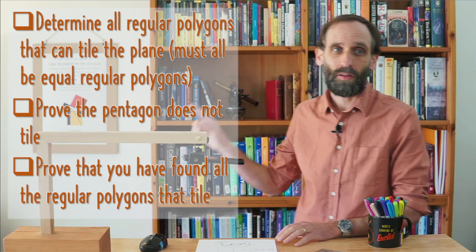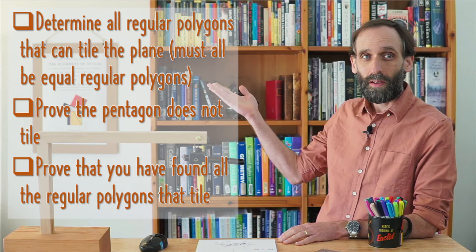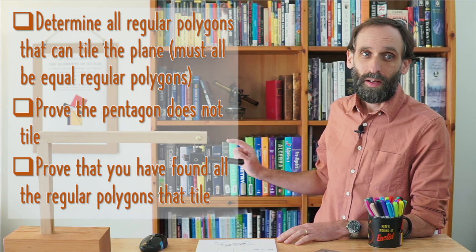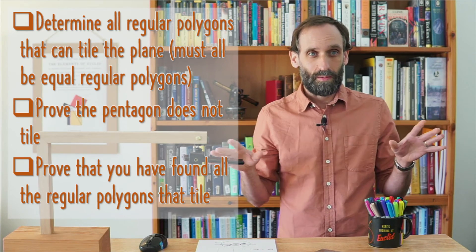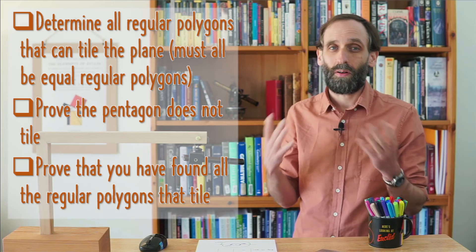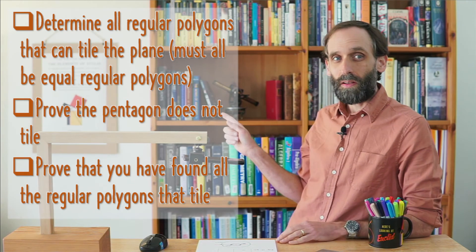Once you think you've figured out all the ones that tile, prove that regular pentagons cannot tile the plane. And then try to prove that you have actually discovered all the ones that do tile—prove that you are done, there are no more that will tile. So I'll put them right here: Number one, determine all regular polygons that can tile the plane. Number two, prove that the pentagon does not tile the plane. And finally, prove that you are done—that you have in fact found all the regular polygons that work.